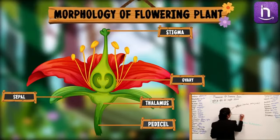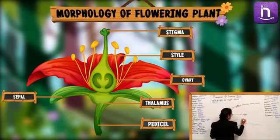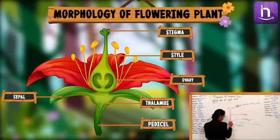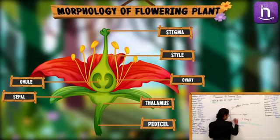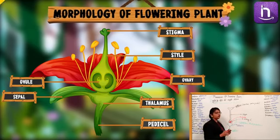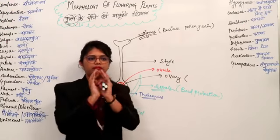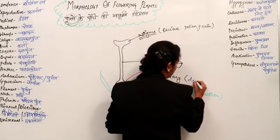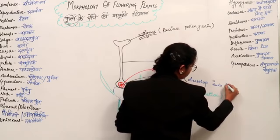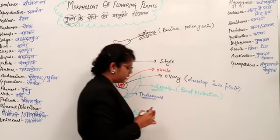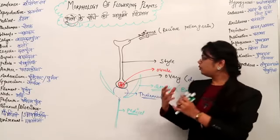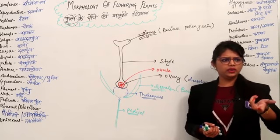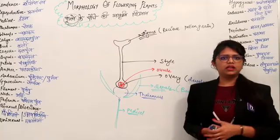After the Stigma, there is the Style, and below that is the Ovary. Inside the Ovary there are compartments containing Ovules. After fertilization, the Ovary develops into a Fruit. So the work of the Ovary is that it later develops into the fruit. If we talk about Ovules, the seed is inside the fruit — like in guava or sapodilla, the seed is inside. The Ovule is enclosed inside the Ovary.